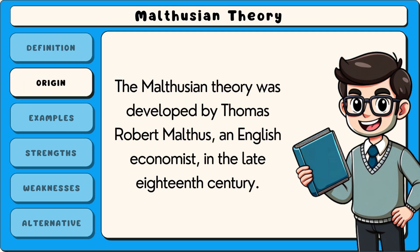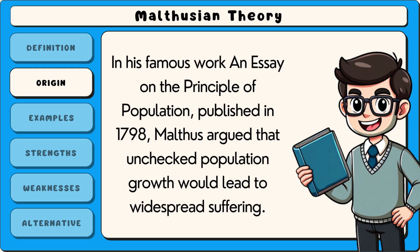The Malthusian theory was developed by Thomas Robert Malthus, an English economist, in the late 18th century. In his famous work, An Essay on the Principle of Population, published in 1798, Malthus argued that unchecked population growth would lead to widespread suffering.